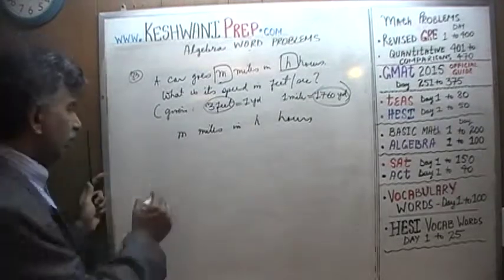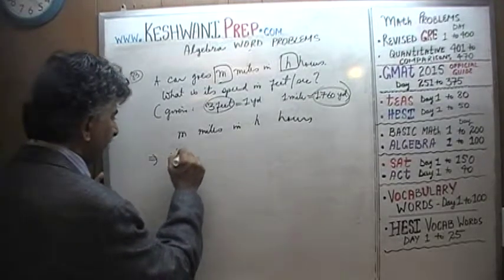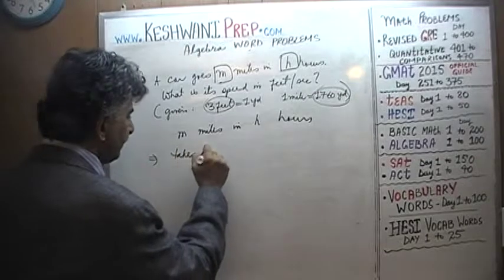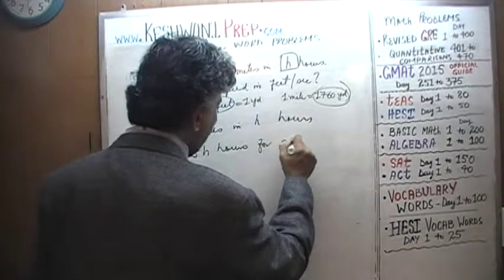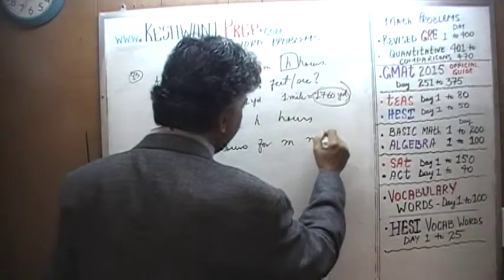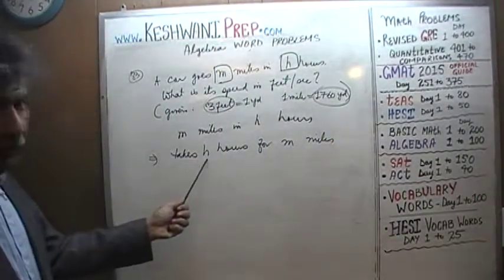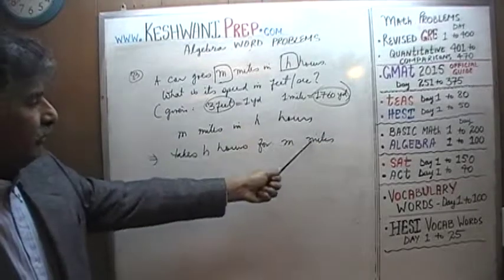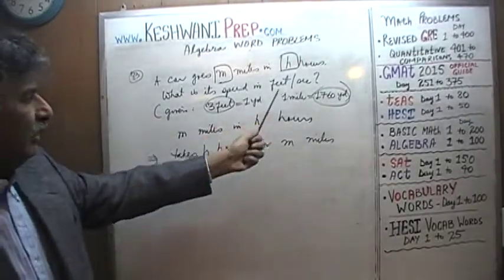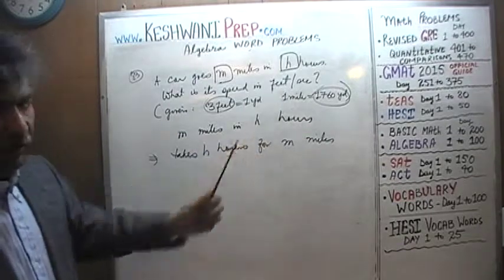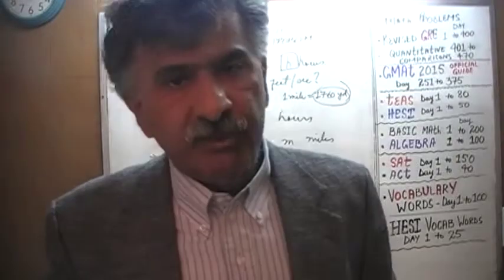So for the sake of convenience, I am going to transpose this. m miles in h hours is the same as saying we are taking h hours for m miles. We don't want hours, we want seconds. We don't want miles, we want feet. So we need to convert these hours into seconds and miles into feet.